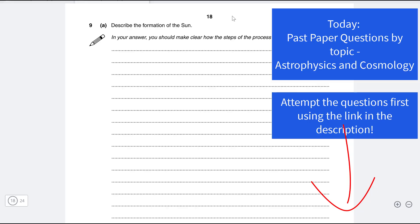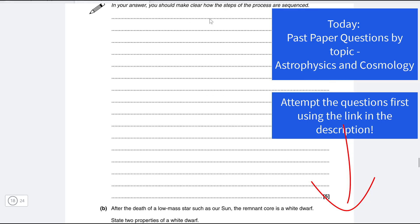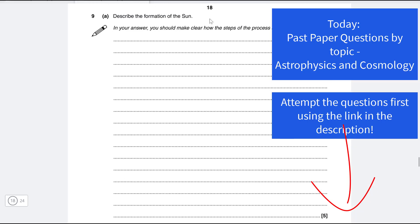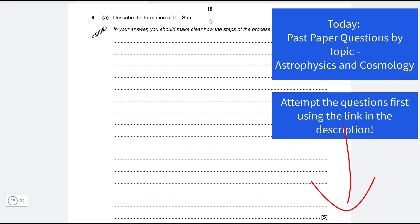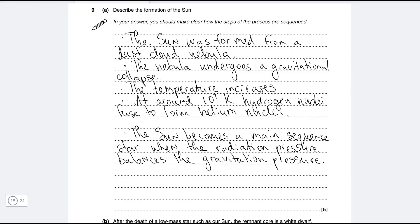Okay well let's get started with question nine from paper from 2010 that is to describe the formation of the sun and this question is for five marks. Okay well let's have a look at my solution. So the sun was formed from an interstellar dust cloud nebula that has undergone gravitational collapse.